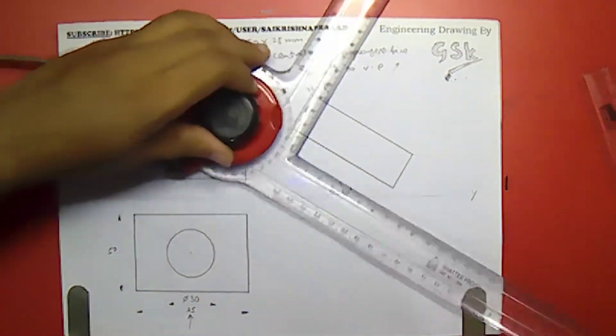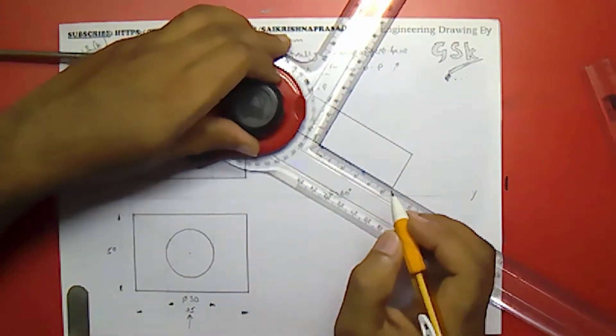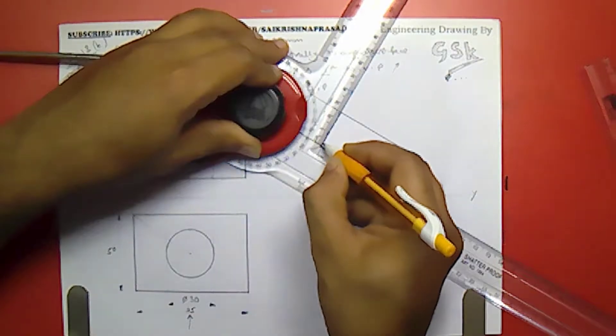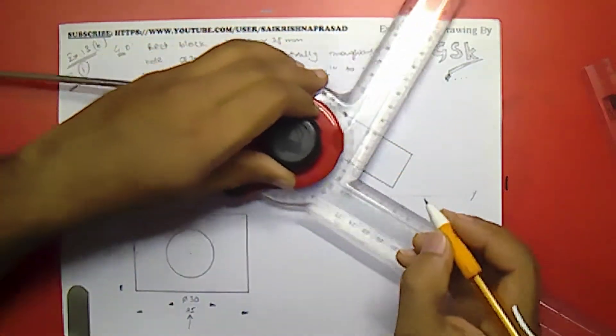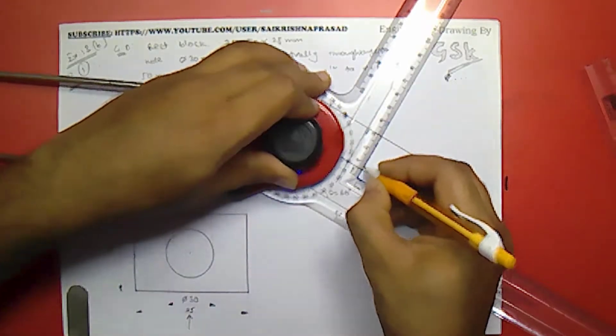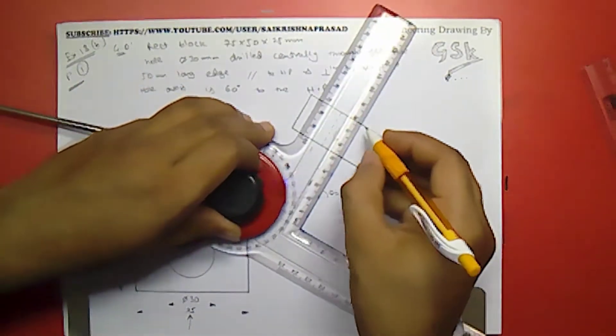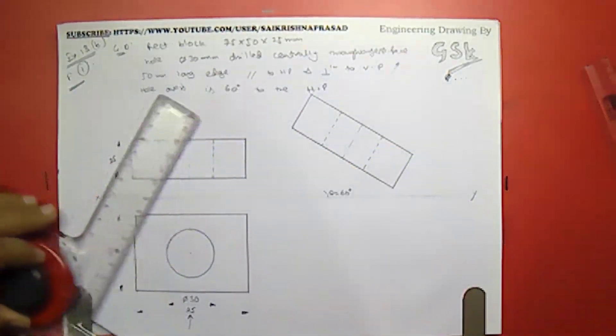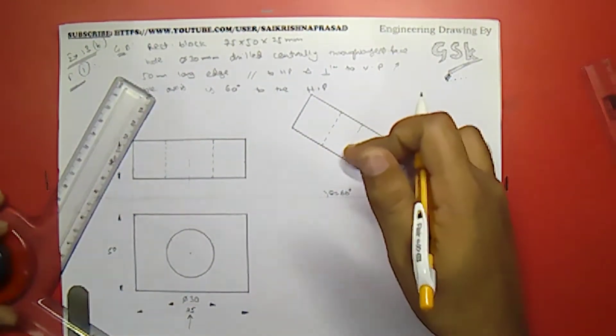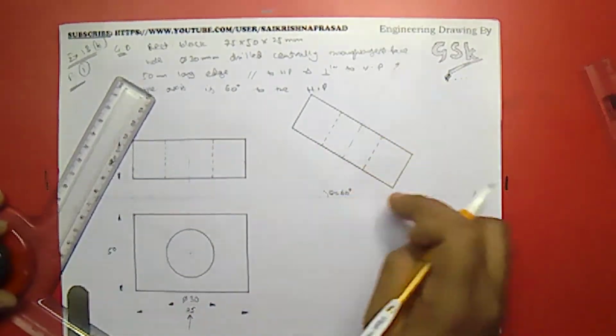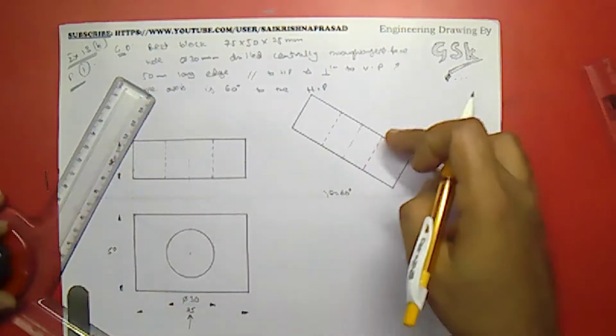So keep it 15, 15 over here. And this would be the axis line. Now I have to reproduce the same over here. I have reproduced this one over here with the 60 degrees angle axis 60 degrees to HP. Now I have to project this down.